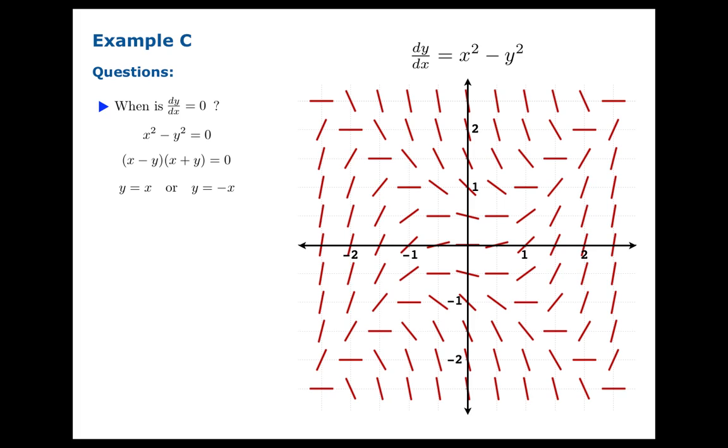We set x squared minus y squared equal to zero, factor, and solve for y. You realize that the line y equals x and y equals negative x provide the location of all the spots where the tangent slopes are horizontal. And that seems to agree with our picture.